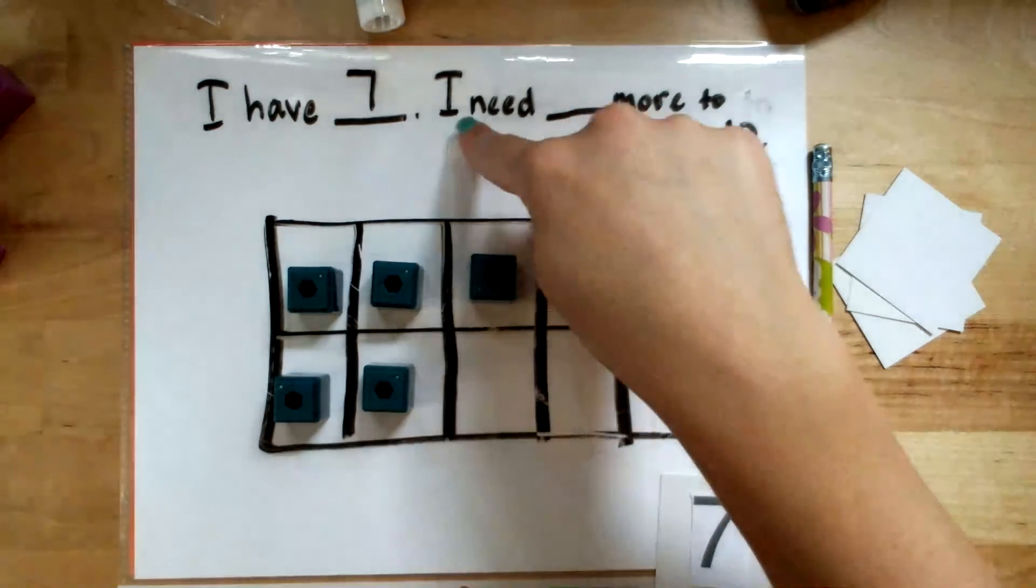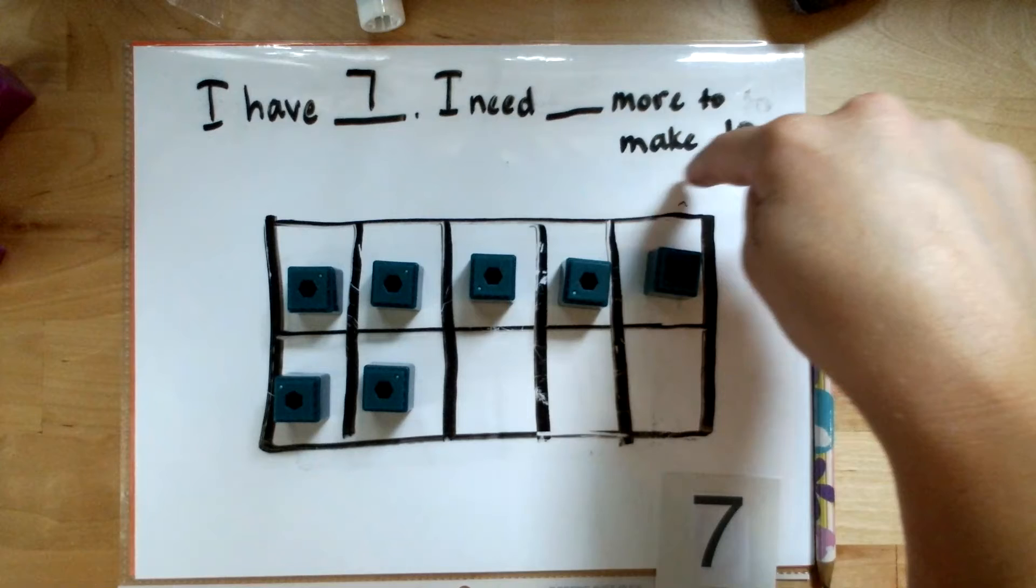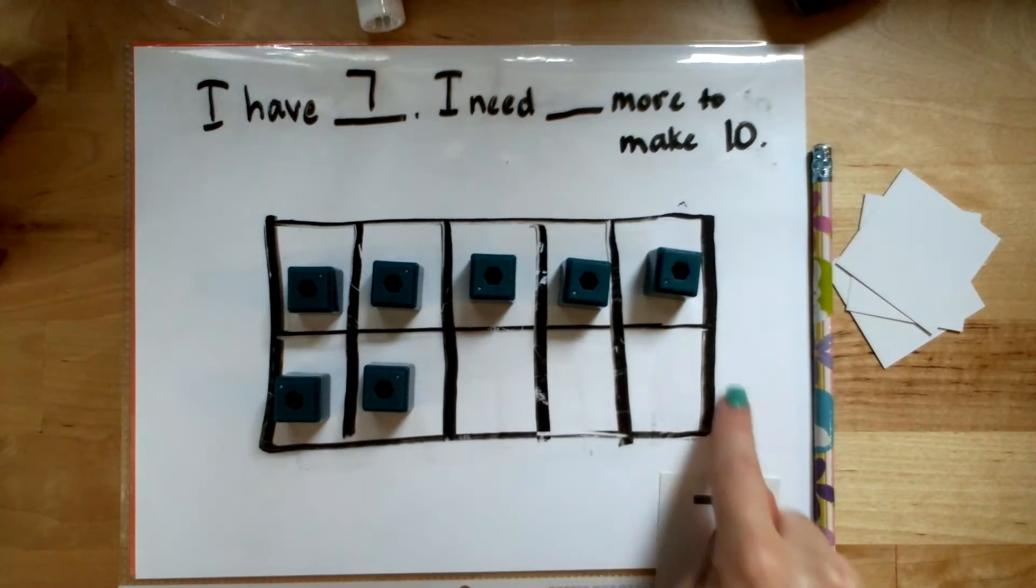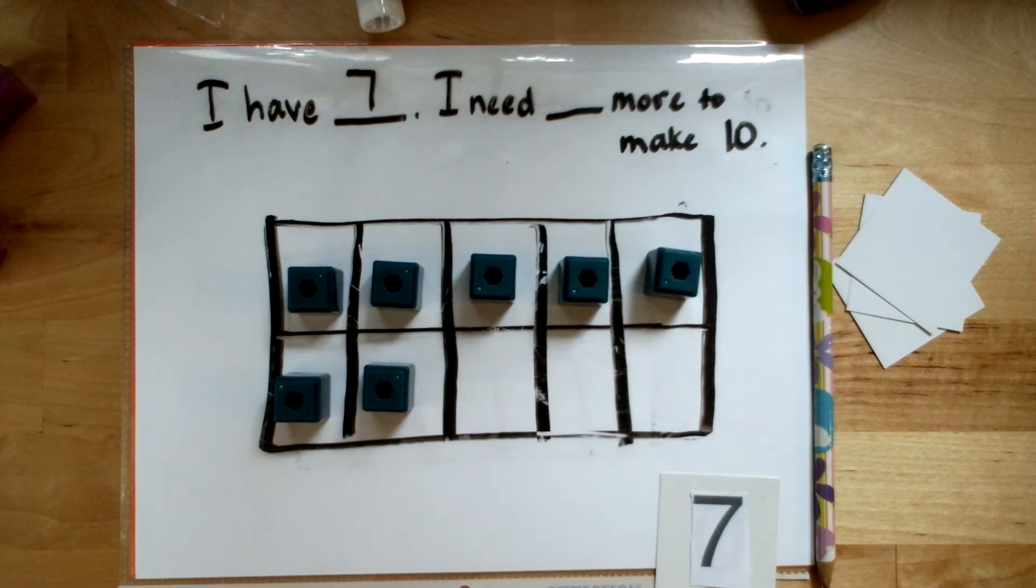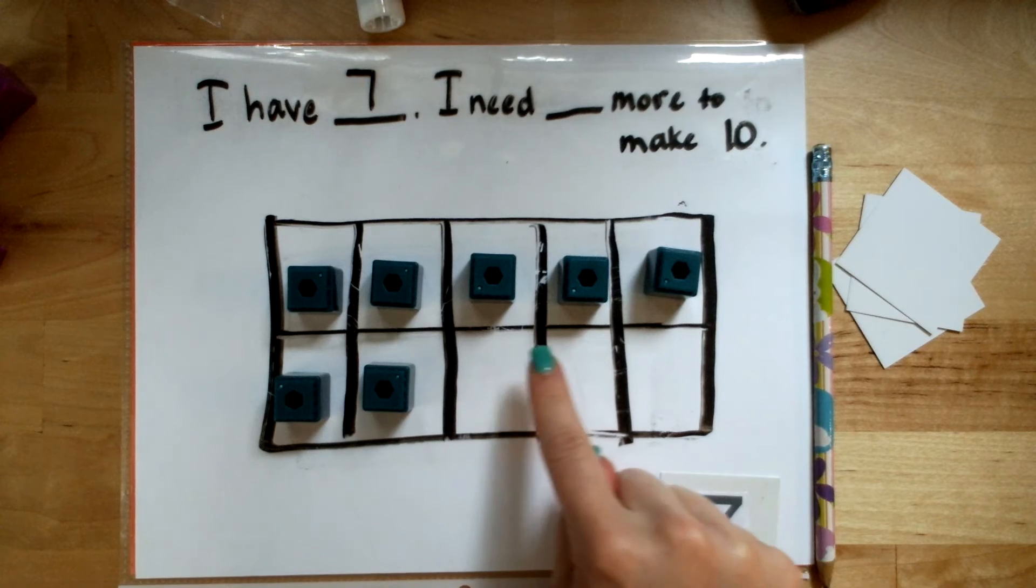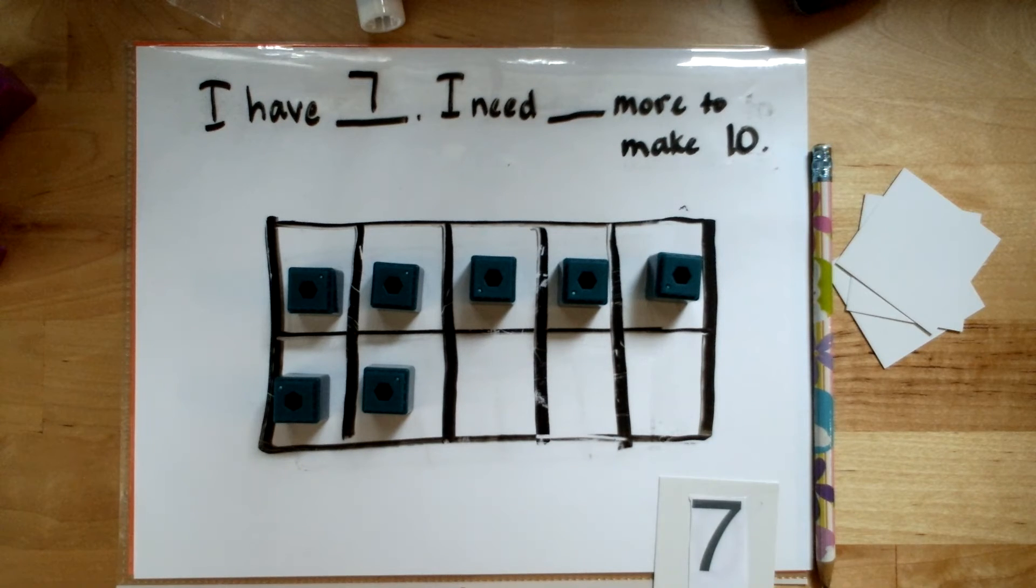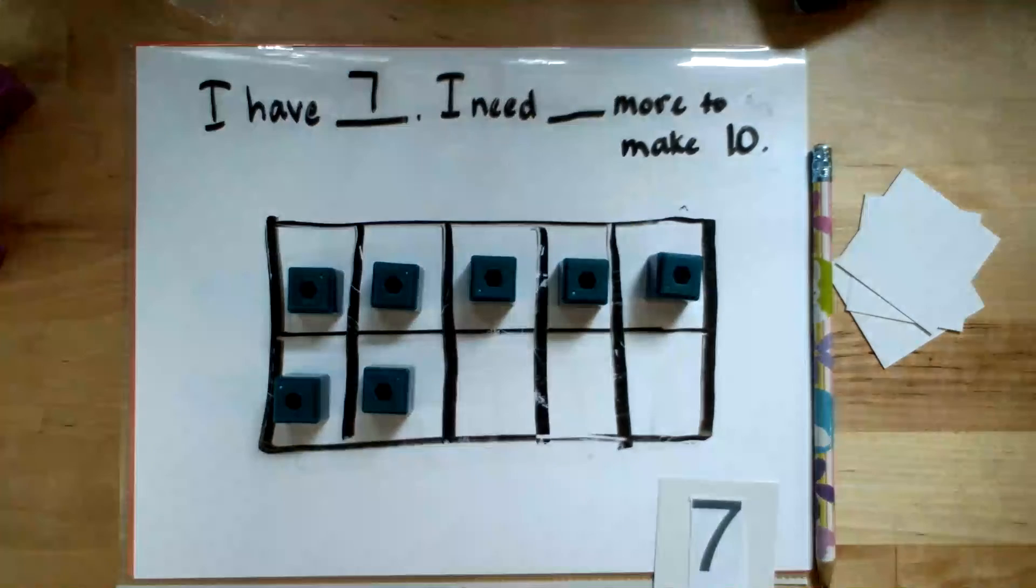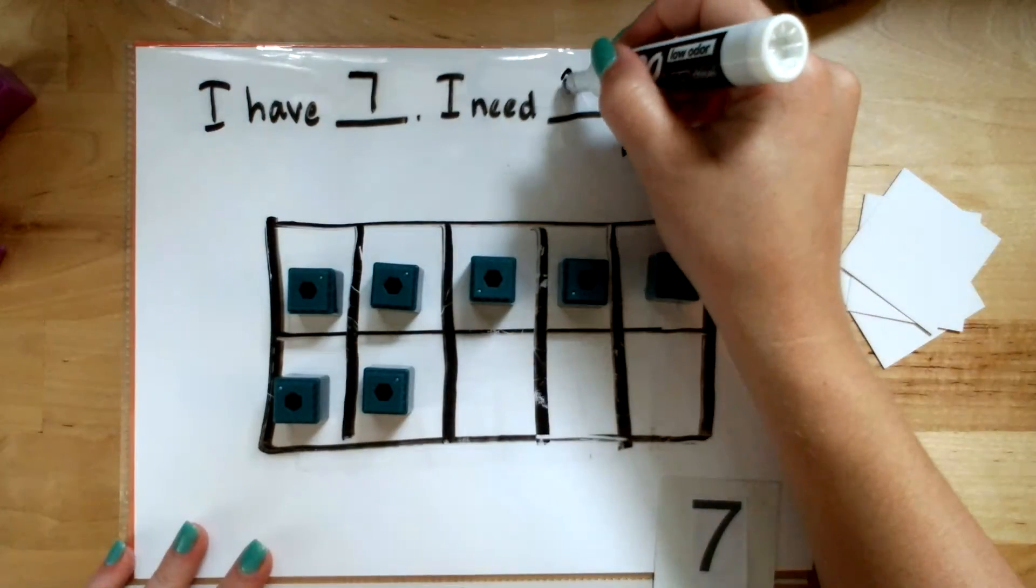I need blank more to make ten. What is the friend of seven that makes ten? How many are blank? Very good. I need three more to make ten.